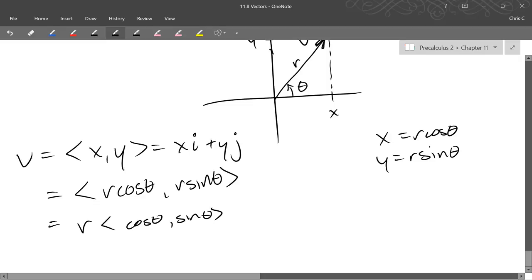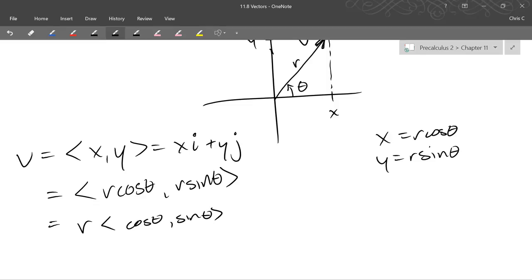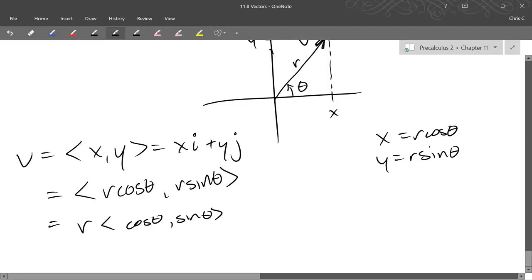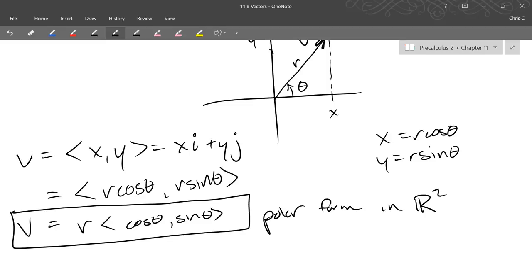So this is written with a magnitude and a direction, and this is a polar form for a vector. So this is polar form. This really only works in two dimensions. If you go up to three dimensions, you need to do things a bit differently. But this is how to do polar form in two dimensions.